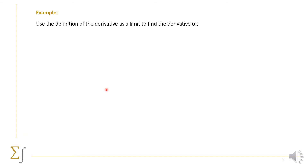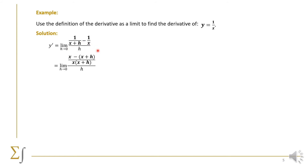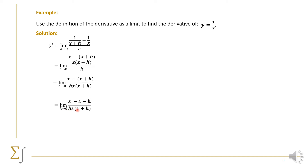Let's see this example where we are asked to use the definition of the derivative as a limit to find the derivative of y equals 1/x. We start by writing y′ equals the limit of f(x+h) minus f(x) over h. Next, we make a common denominator by cross-multiplying: we get (x minus (x+h)) over x(x+h), then we take this denominator down next to h. So we have the limit of x minus (x+h), all over h·x·(x+h).